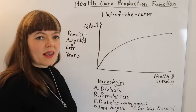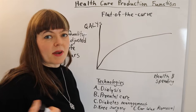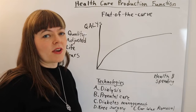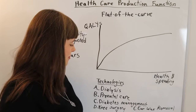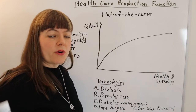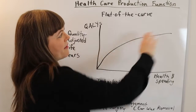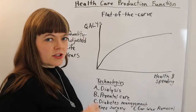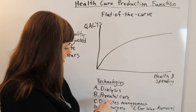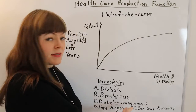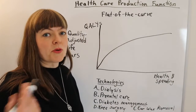We make a huge long list of all the technologies that our system covers — things you can get taken care of or added to your health bill when you go to the doctor — and then we rank those according to their cost effectiveness. That's how we get the shape of this production function. So as an example, we have technologies like dialysis, prenatal care, diabetes management, knee surgery, and earwax removal.